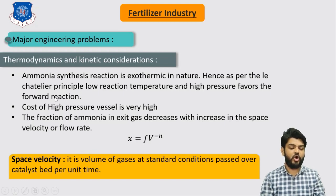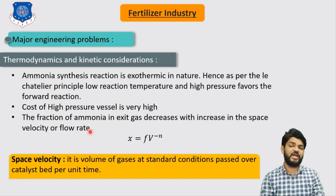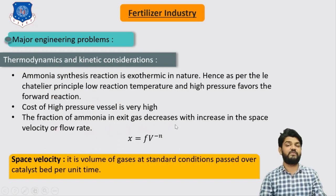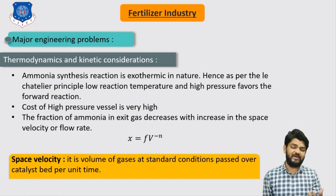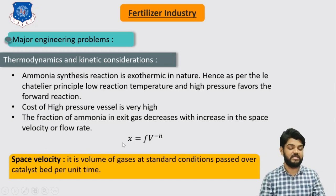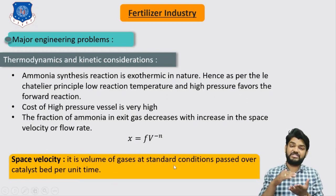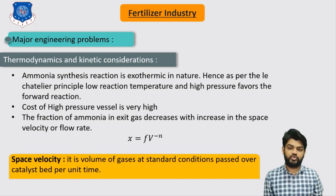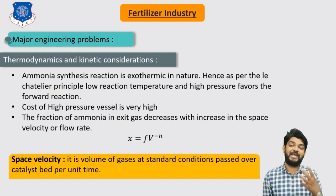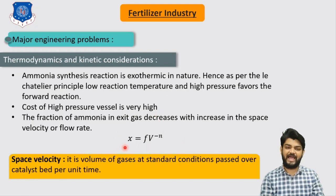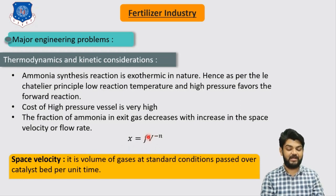The cost of high pressure vessels is very high. Additionally, the fraction of ammonia in the exit gas decreases with increasing space velocity. Space velocity is defined as the volume of gases at standard conditions passed over the catalyst weight per unit time. As we increase space velocity, ammonia conversion decreases, as described by the formula where x is conversion, v is space velocity, and f and n are constants, with n being the order of reaction.